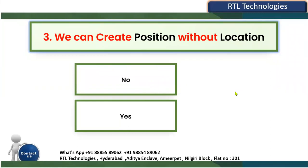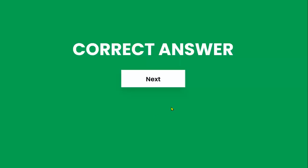Third question: Can we create a position without a location in Human Capital Management? When creating positions, the system asks for several fields, including location. The answer is True — location is NOT a mandatory field; it's optional. The mandatory fields when creating a position are Business Unit, Department, and Job. Location is optional.